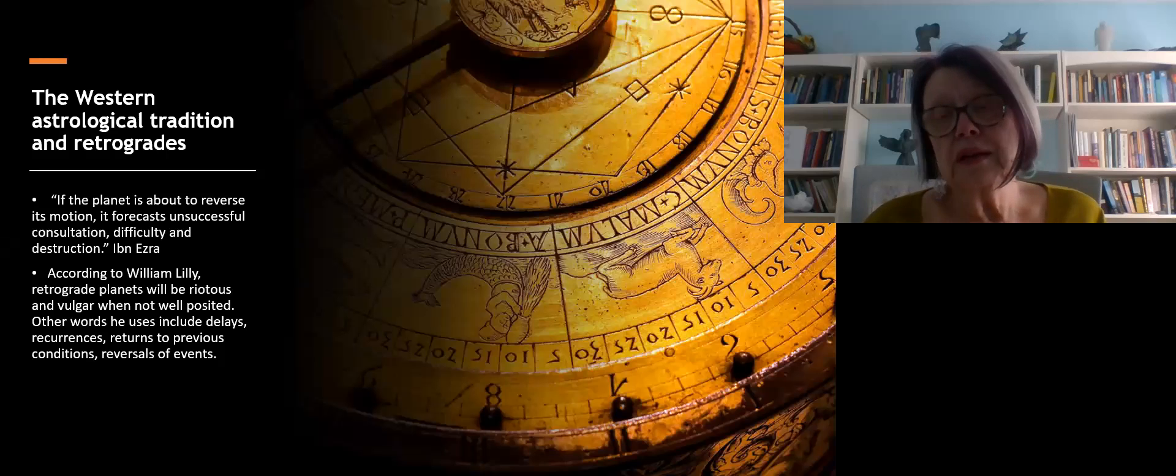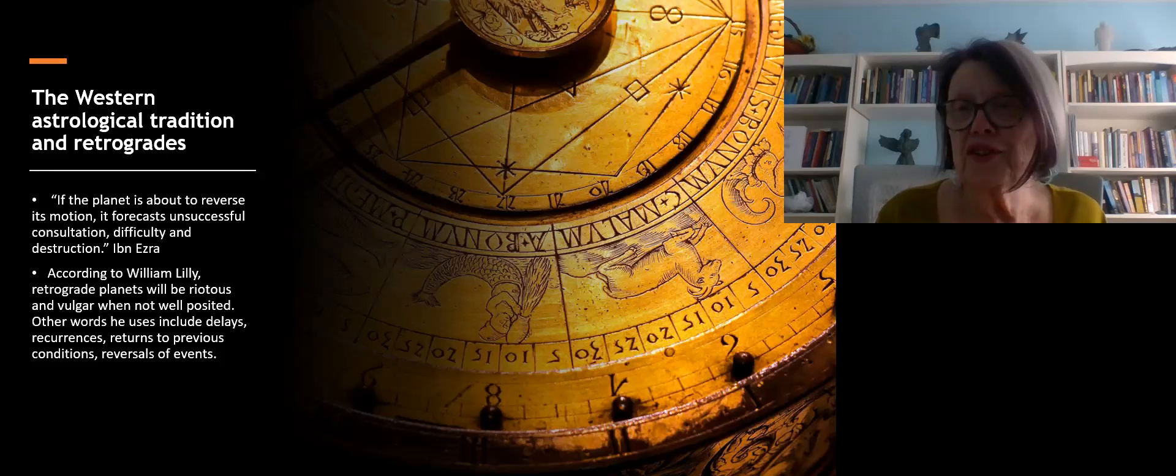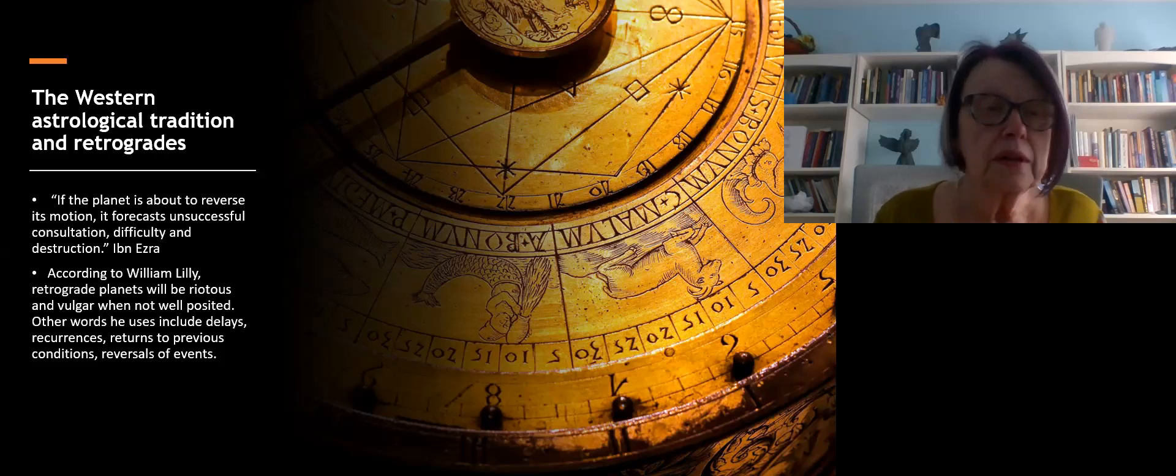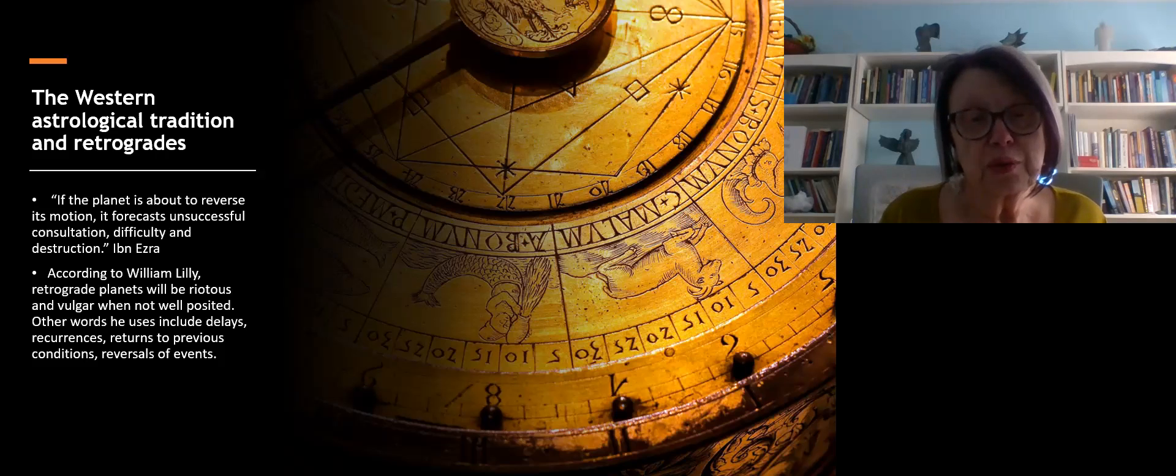This talk comes from my own personal experience. I have six retrograde planets in my chart, and as I began to study basic astrology it was a little bit disturbing and discouraging when you looked at how the western astrological tradition views retrogrades. Here's just a few quotes to get us in the space. Ibn Ezra says if the planet is about to reverse its motion it forecasts unsuccessful consultation, difficulty and destruction.